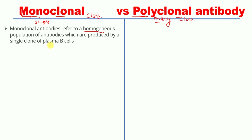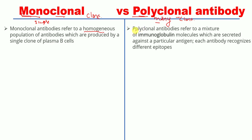Polyclonal antibodies — 'poly' means many and 'clonal' means clone of plasma B cells. Polyclonal antibodies are a heterogeneous mixture of immunoglobulin molecules, or antibodies, secreted against a particular antigen, where each antibody recognizes different epitopes.